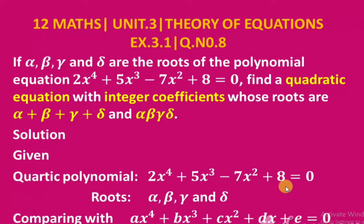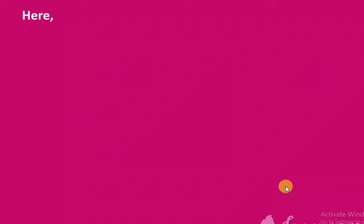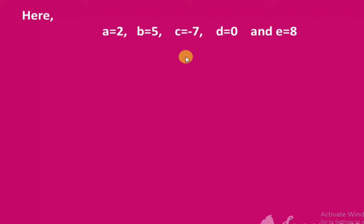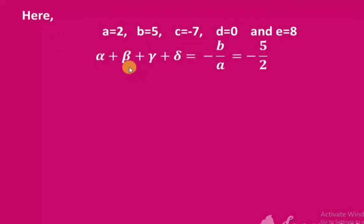The dx term is absent, so d = 0, and e = 8. Now, using Vieta's formulas, the sum of the roots: alpha + beta + gamma + delta = -b/a = -5/2.